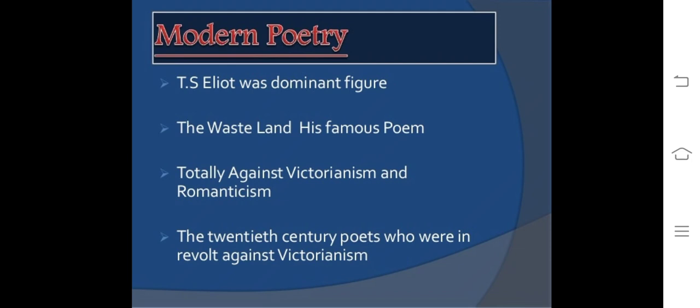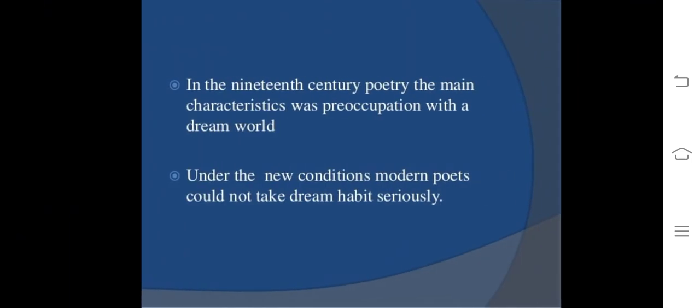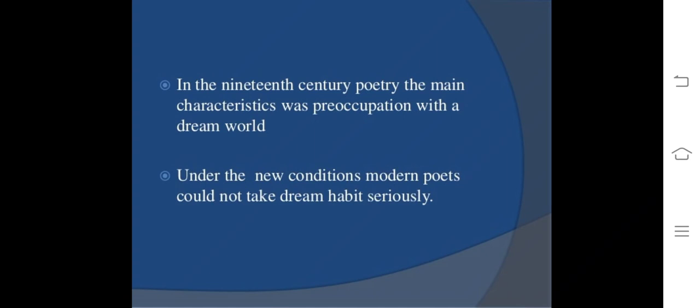Modern poetry: T.S. Eliot was one of the dominant figures during this age. His 'The Waste Land,' which was published in 1922, is considered the milestone in the history of English literature. It was totally against Victorianism and Romanticism. The 20th century poets were in revolt against Victorianism.